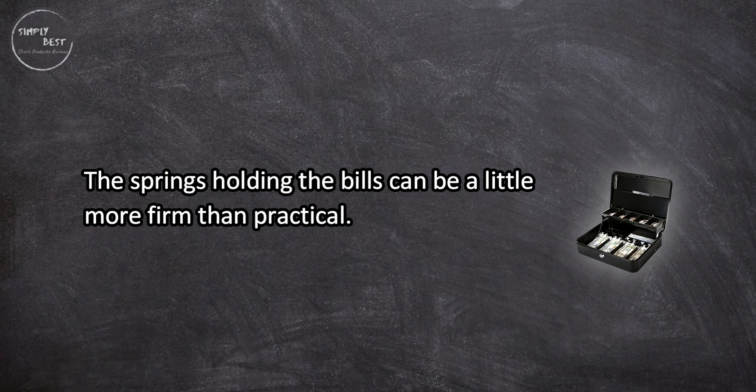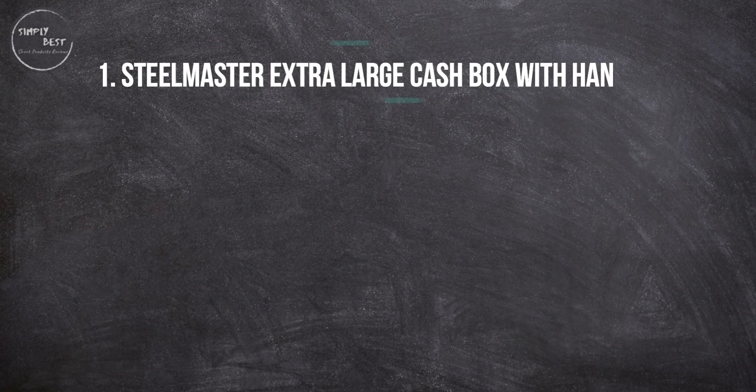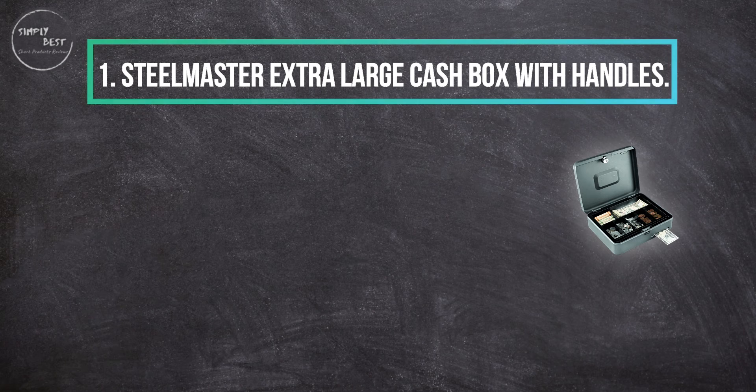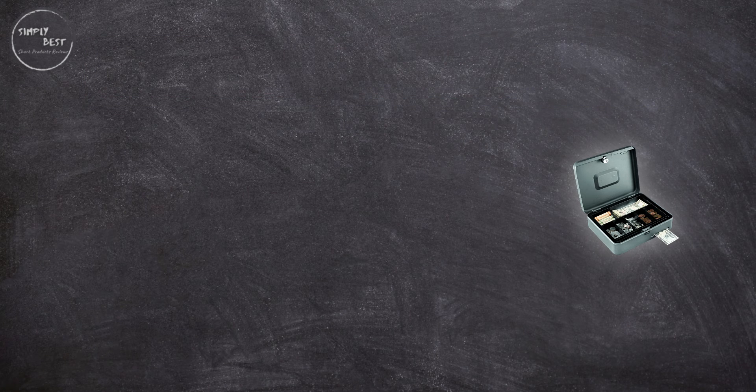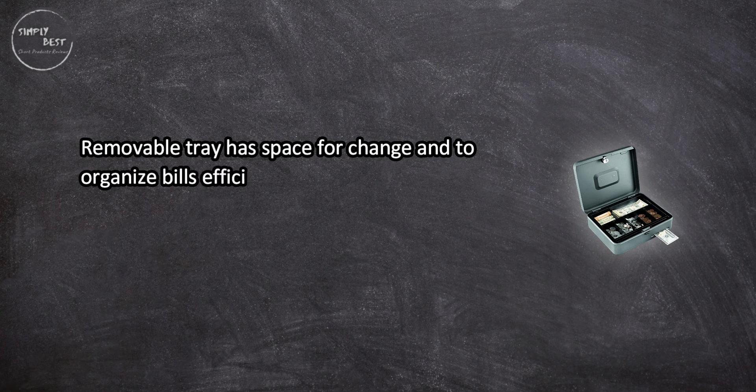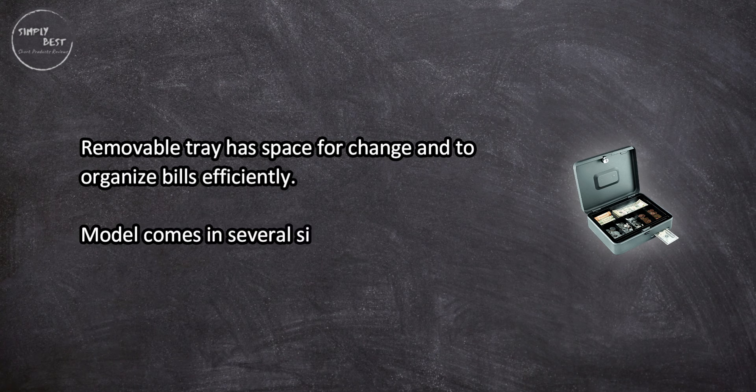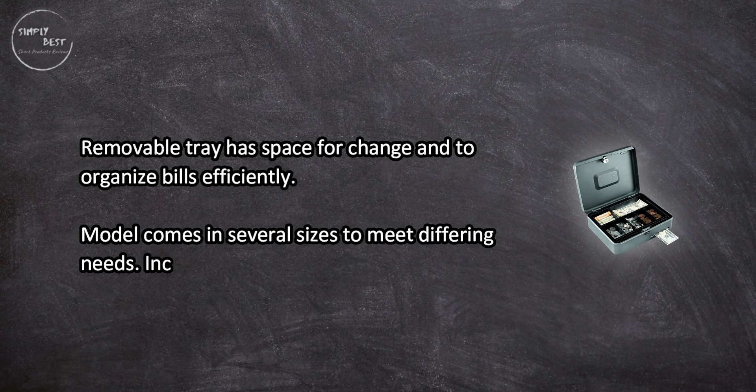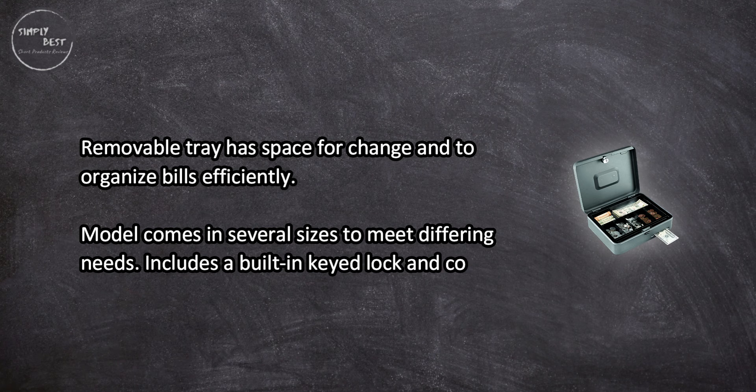At number one, SteelMaster extra large cash box with handles. Removable tray has space for change and to organize bills efficiently. Model comes in several sizes to meet differing needs, includes a built-in keyed lock and comes with two keys.